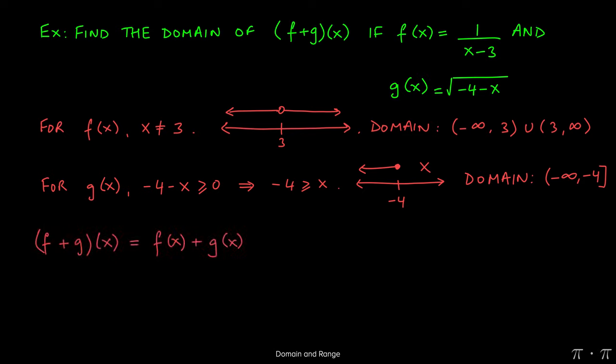Now remember, notationally, f plus g of x is just another way of writing f of x plus g of x. It just indicates the sum of the two functions. So we can write the two functions together with a plus in the middle, we get 1 over x minus 3 plus the square root of negative 4 minus x.